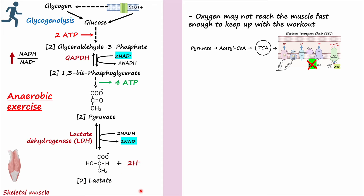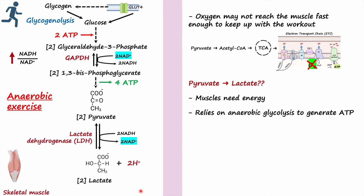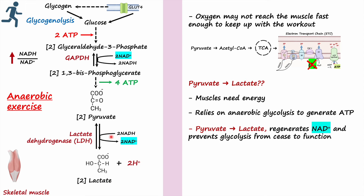Why does skeletal muscle reduce pyruvate to lactate? Muscles need energy and, with no oxygen, rely completely on anaerobic glycolysis. When pyruvate is reduced to lactate, NADH is oxidized back to NAD+. This regenerated NAD+ can then be used to oxidize glyceraldehyde 3-phosphate to 1,3-bisphosphoglycerate. Without this NAD+ regeneration, the glycolysis pathway cannot function. So the main reason for reducing pyruvate to lactate is to regenerate NAD+ and prevent glycolysis from ceasing.